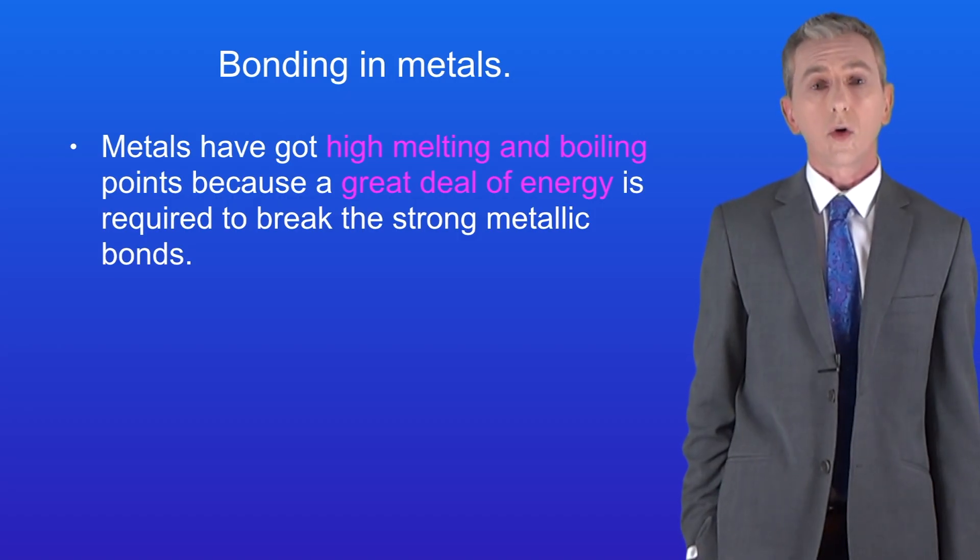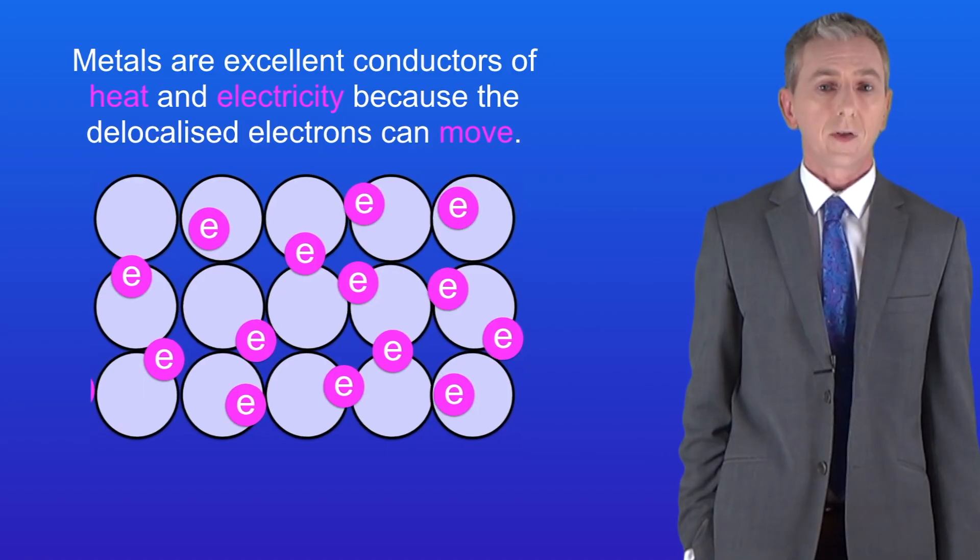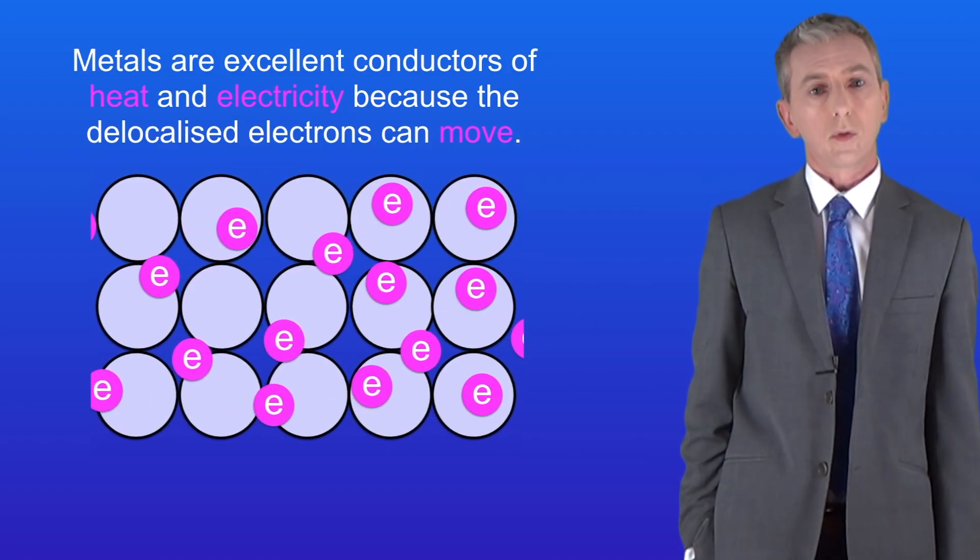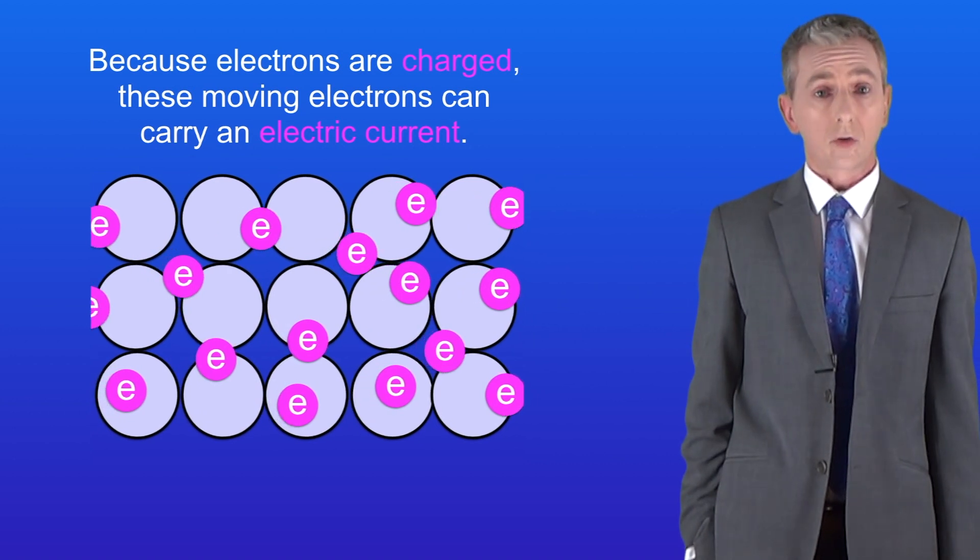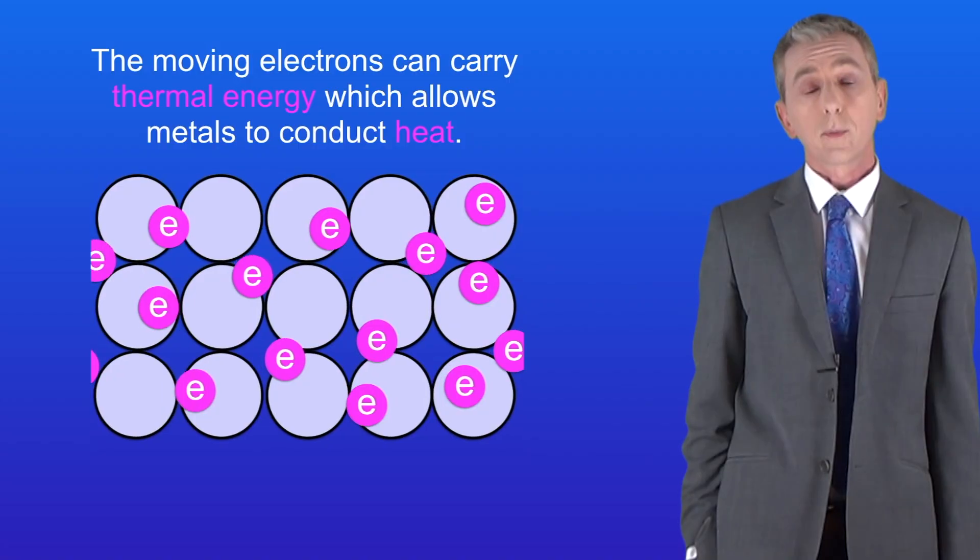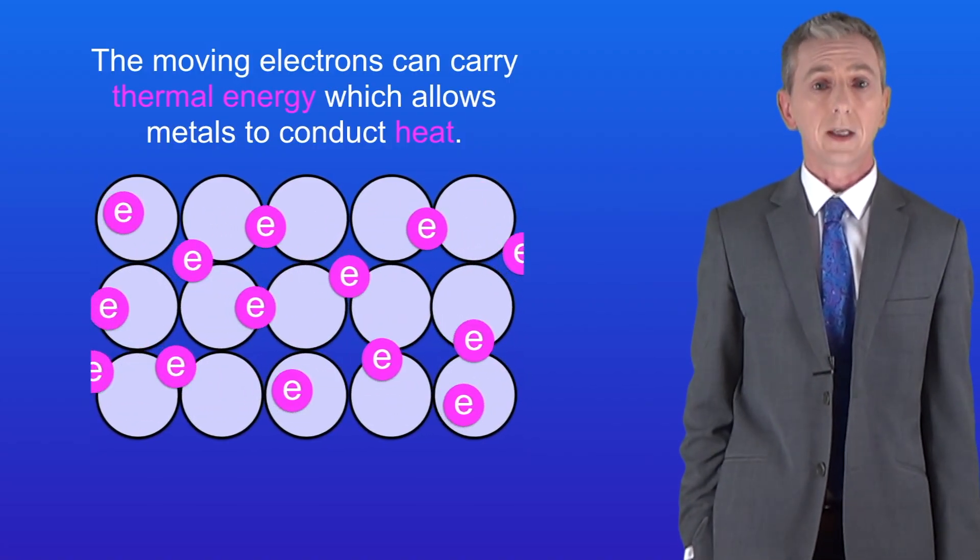The delocalized electrons also explain another property of metals. Metals are excellent conductors of heat and electricity. That's because the delocalized electrons can move. Because electrons are charged, these moving electrons can carry an electric current. Also the moving electrons can carry thermal energy, which allows metals to conduct heat.